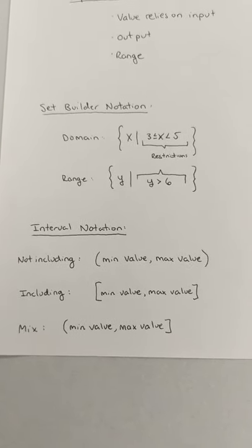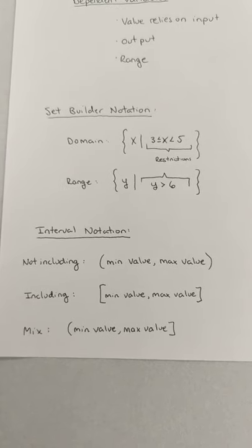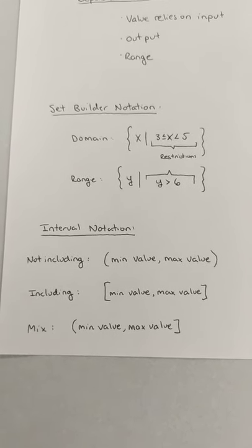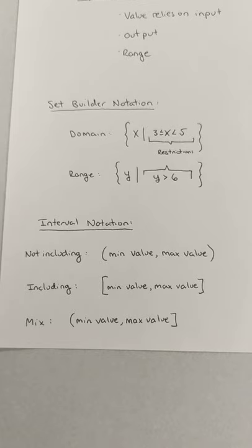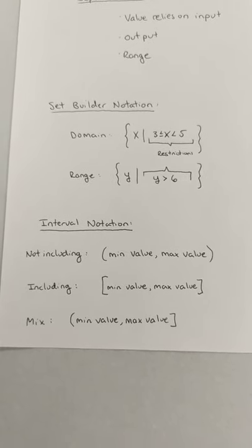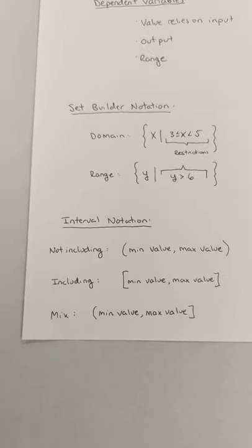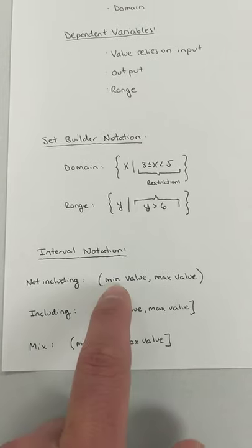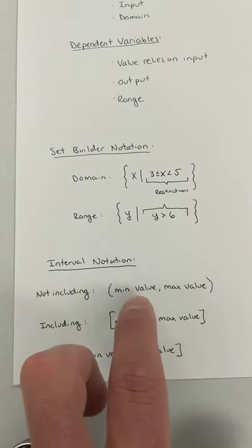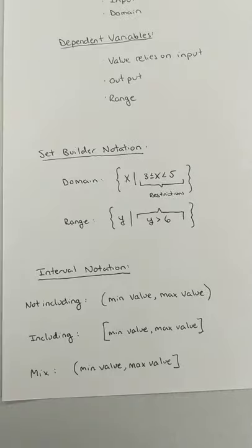So if you wanted to say that you were not including your first or your last value, you would use parentheses, and then you just have your minimum value comma the maximum value. So like in this example up here, if I was going from 3 to 5, not including either, I would do parentheses 3 comma 5, close the parentheses.